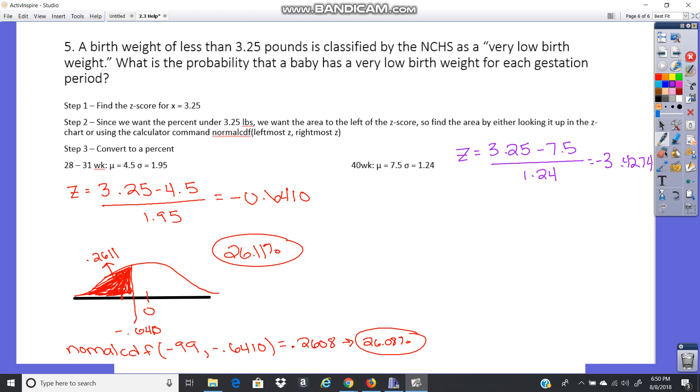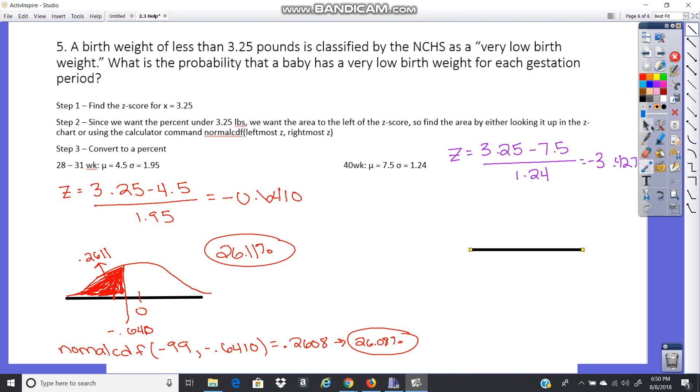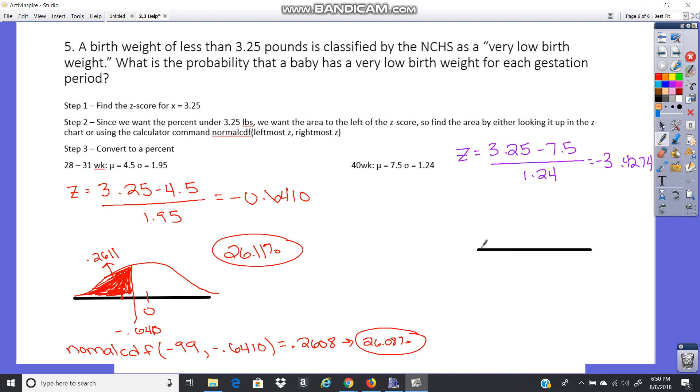Okay, so on that normal curve. Okay, here's 0, negative 1, 2, 3. That's like right here. So this is going to be a really, really small percent.